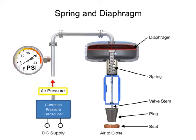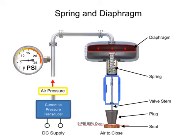For example, a pressure of 9 PSI applied to the diaphragm moves the spring and valve stem to 50% of the operating range.